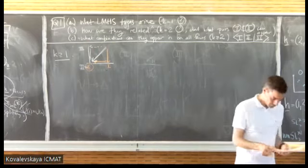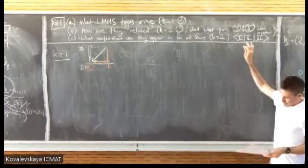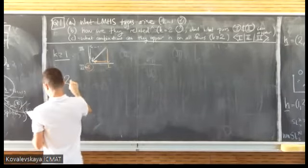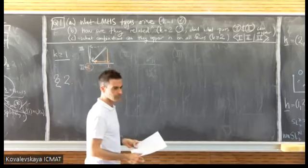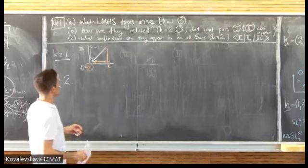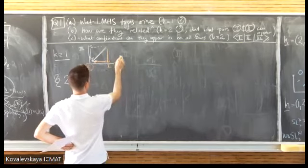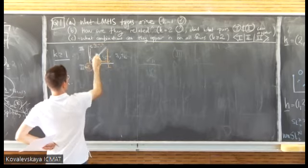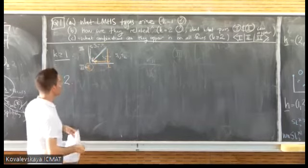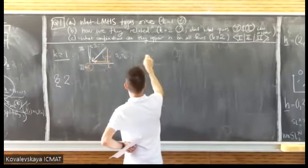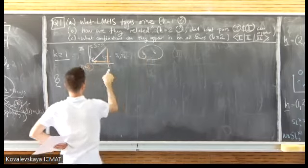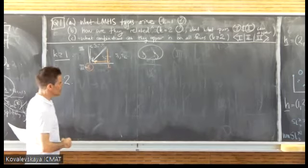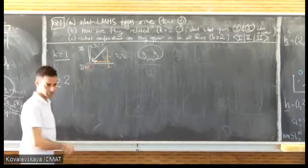For example, I could have a genus-2 curve where one cycle gets pinched to a point in limit 1 and another cycle in limit 3, and both get pinched in limit 2. But much more complicated things could happen, and it's certainly not the case that limits 1 and 3 need to be the same type. Let me say a little bit about Hodge loci. An important aspect of period maps is that there are special loci where some periods vanish.